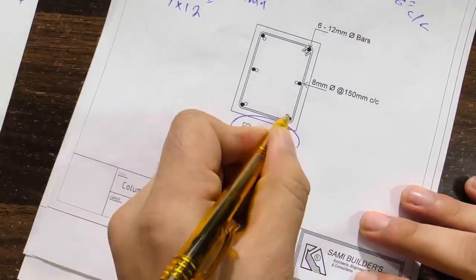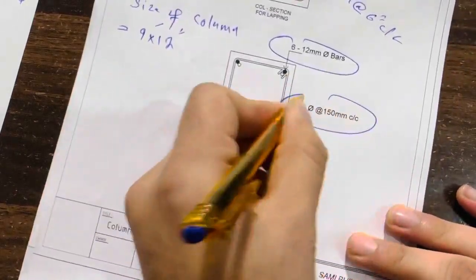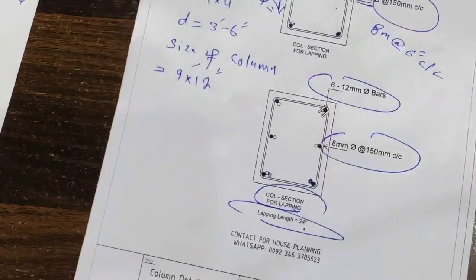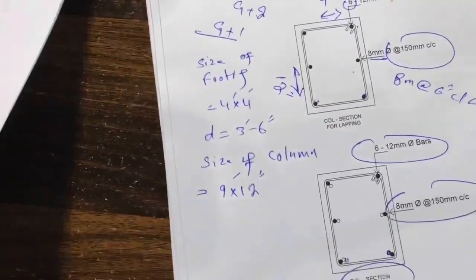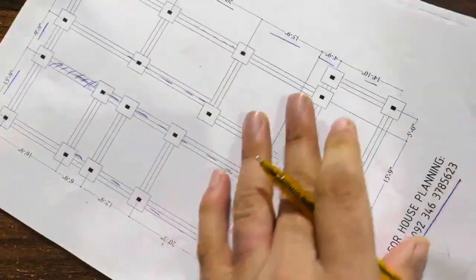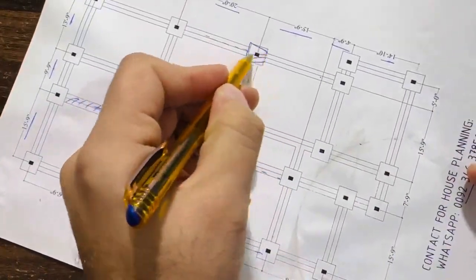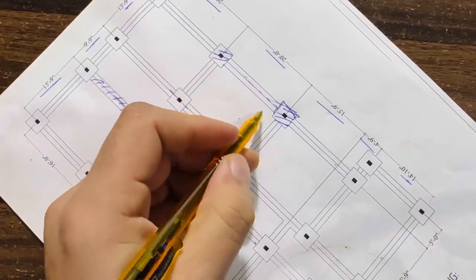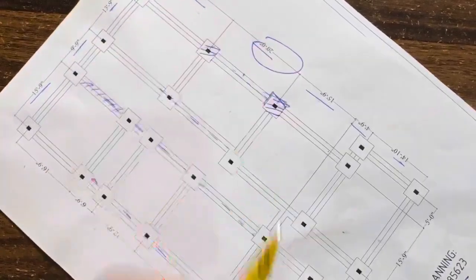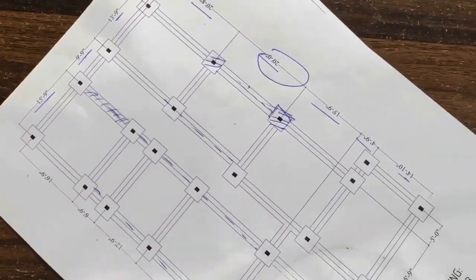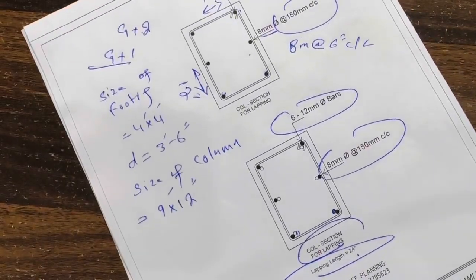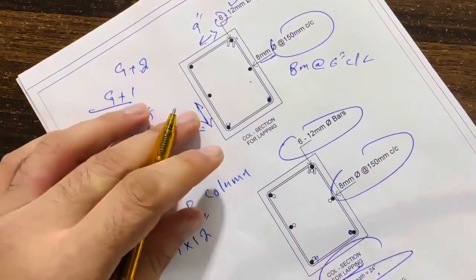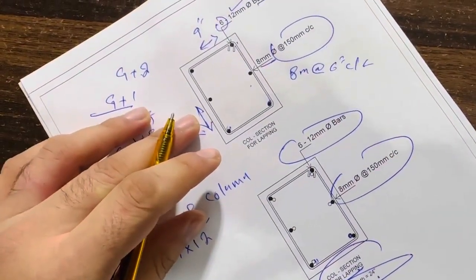You can see the column section for the lapping. The size is the same for steel reinforcement, and the lapping length is 24 inches for this column. This is the layout plan inside the footing. The maximum span is 20 feet for this design. This short video guided you for the size of footing, layout plan, column size, and structural design. Thanks for watching — see you in the next video, goodbye.